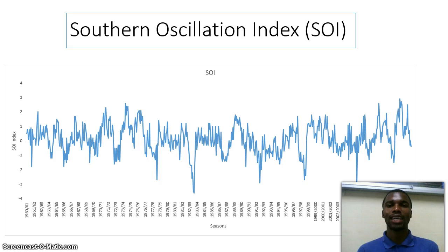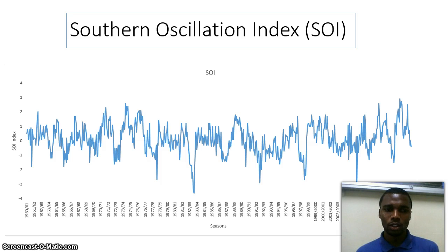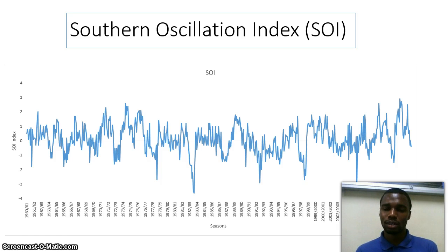Another concept we need to understand is the SOI, which is the Southern Oscillation Index. This is the measurement of the mean sea level pressure difference between Tahiti and Darwin — we subtract the mean sea level pressure of Darwin from Tahiti and we get an index. As you can see, this is an example of the SOI from the years 1960 to 2012. When you have an index which is below minus 1, you expect to have an El Niño. When you have an index above 1, you experience a La Niña over the Pacific Ocean. The SOI measures the ENSO conditions over the Pacific Ocean.